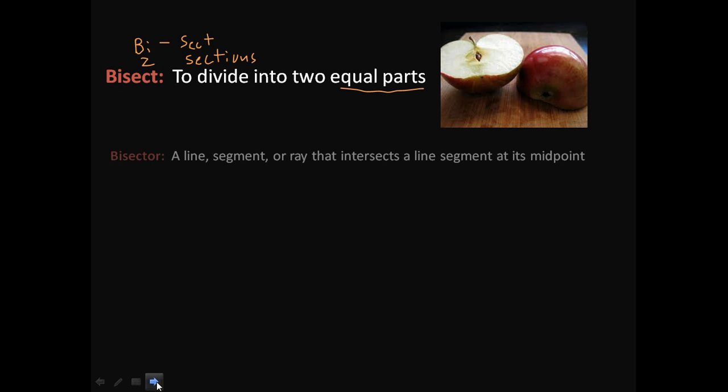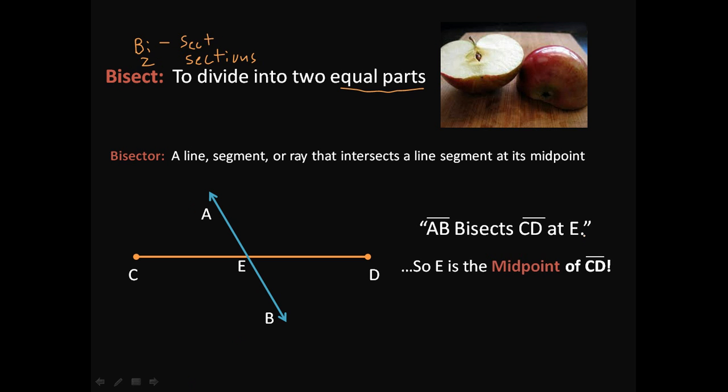So another word that's related to that is a bisector. And a bisector is a line, segment, or ray that intersects a line segment at its midpoint. So here we have a line, and we know that line AB bisects CD at E. So E then is the midpoint of CD. Let's follow this again. We have CD. And we know that AB, this line AB, bisects segment CD at this point right here. So what that means is that E is the midpoint of CD.